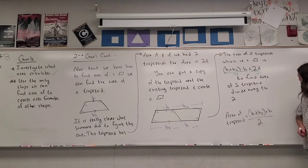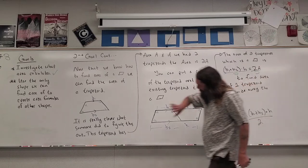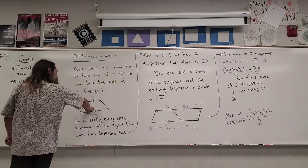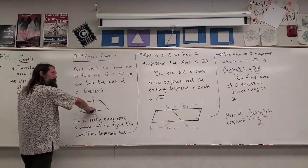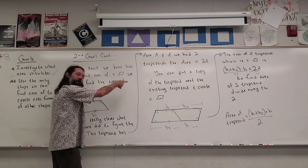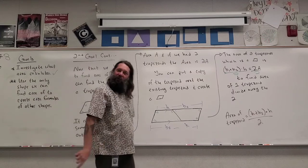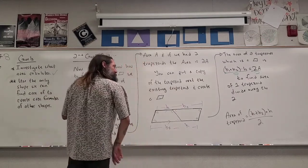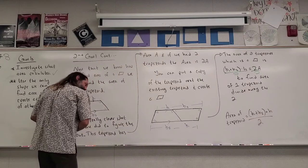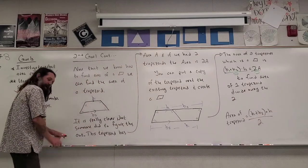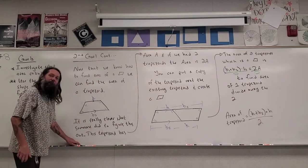This formula calculates how many squares it takes to cover the trapezoid. This formula comes from finding the area of a parallelogram, which comes from finding the area of a rectangle. Let me clean this up and show you how we find the area of a triangle.